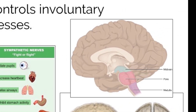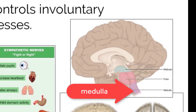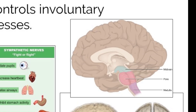The brain stem itself can be broken down into three distinct parts, one of which is the base, called the medulla. The medulla controls very important autonomic processes like swallowing, breathing, and heart rate via a signal to the SA node.